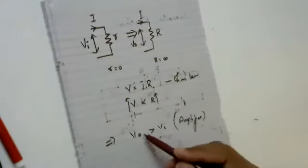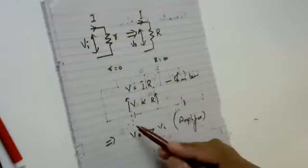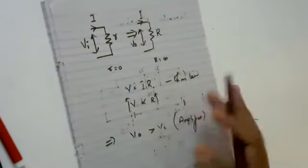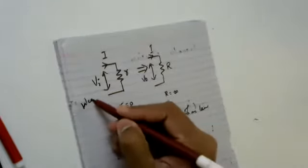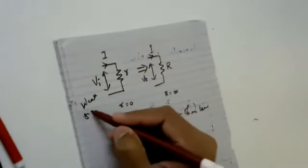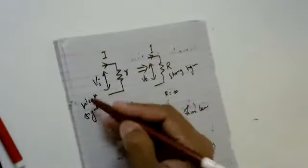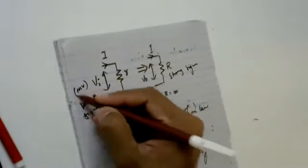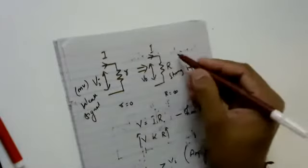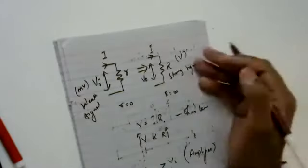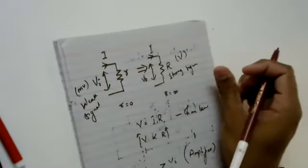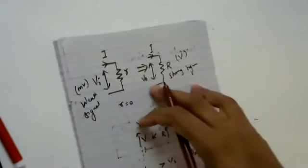This is how we say the transistor works like an amplifier in active mode. The input voltage will be in terms of millivolts, and the output voltage will be in terms of volts. So we are converting a weak signal into a strong signal — this is what we call the transistor working as an amplifier.